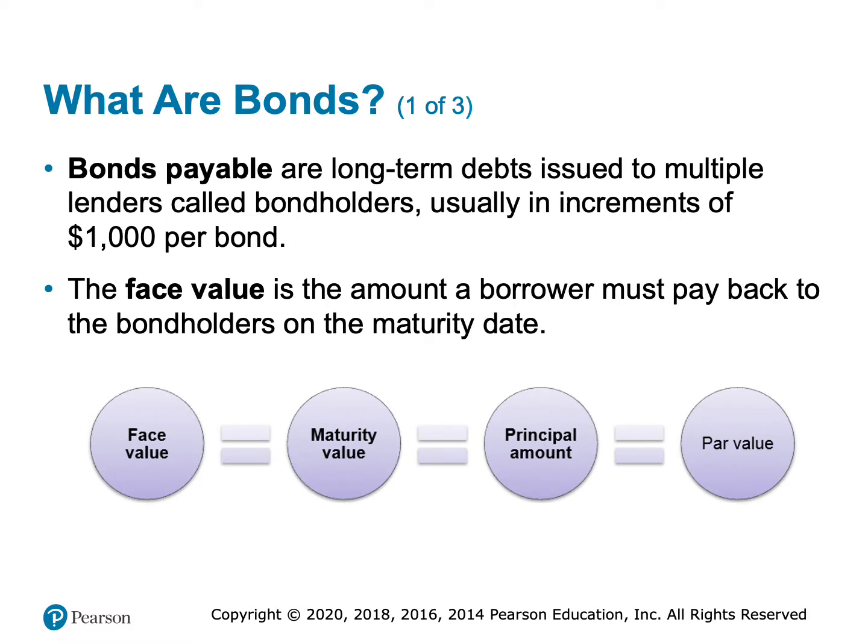Bonds payable are debts. They're usually issued in increments of a thousand dollars, though they don't have to be — they can be issued in any increment. A thousand dollars is just the norm.